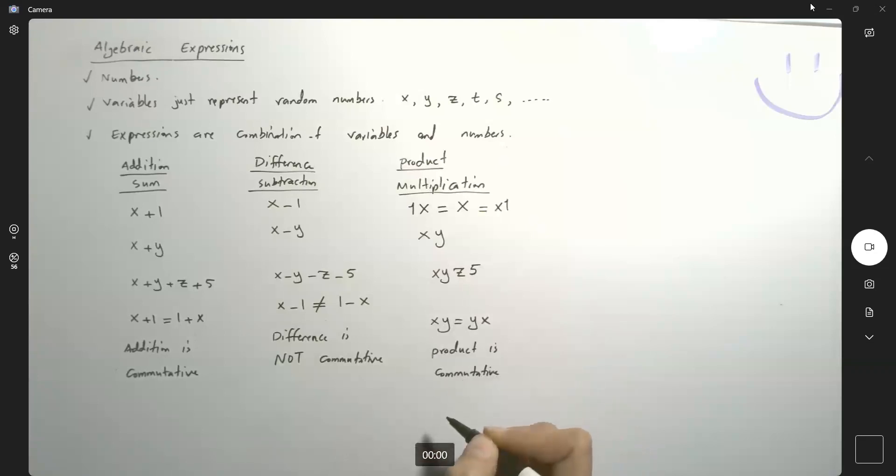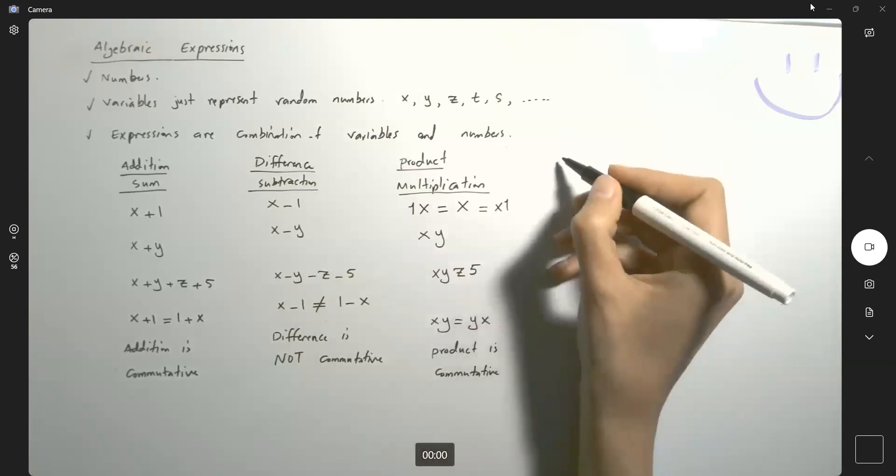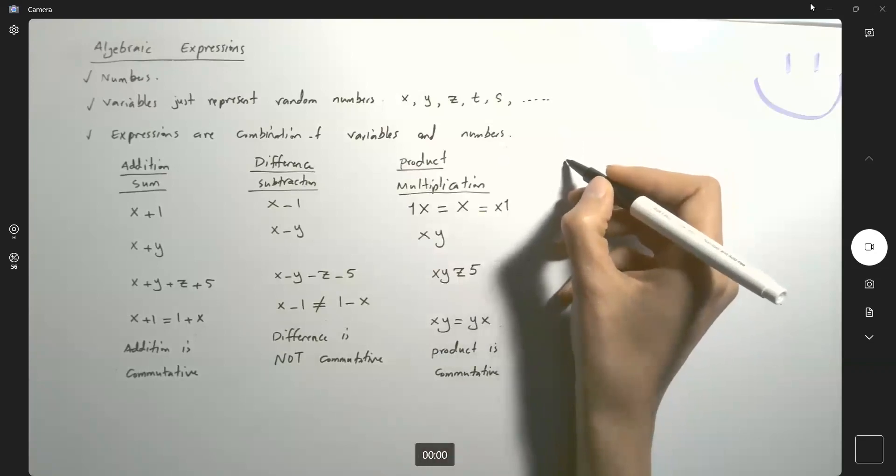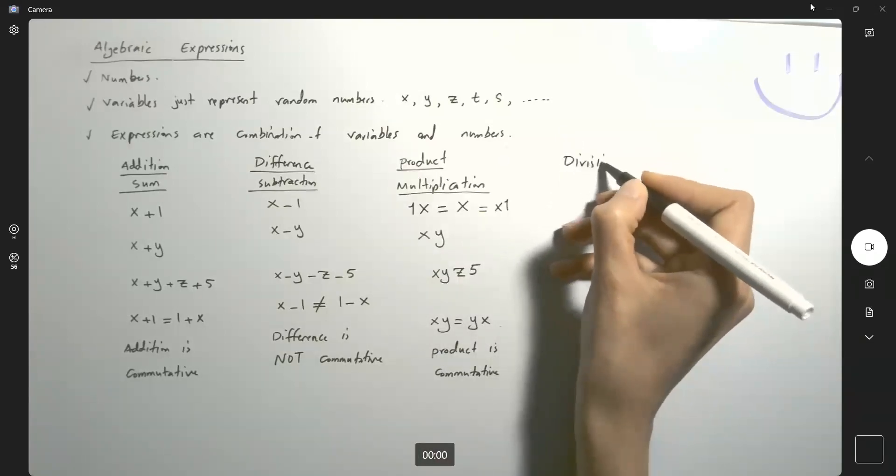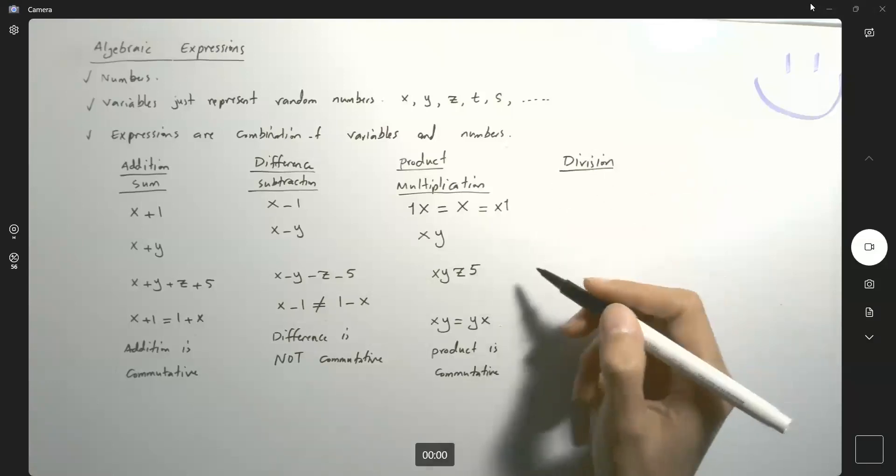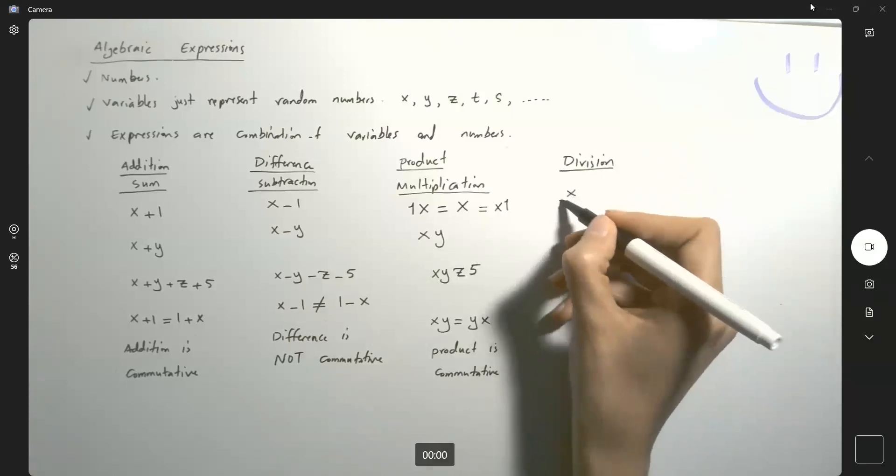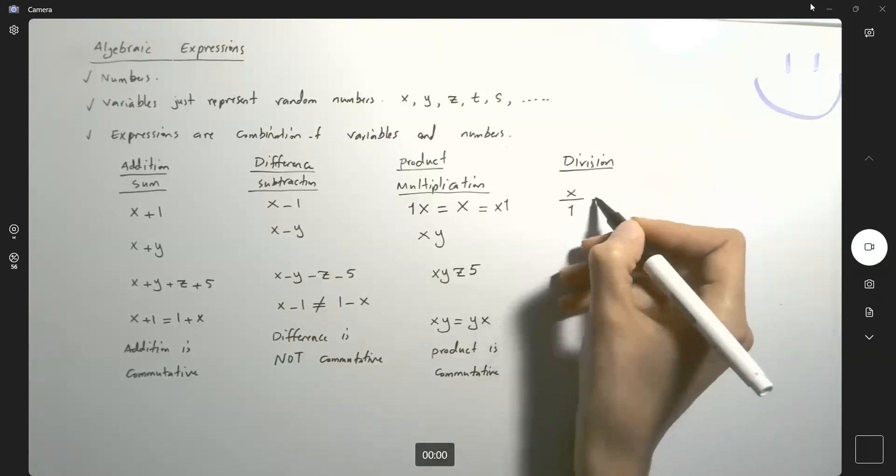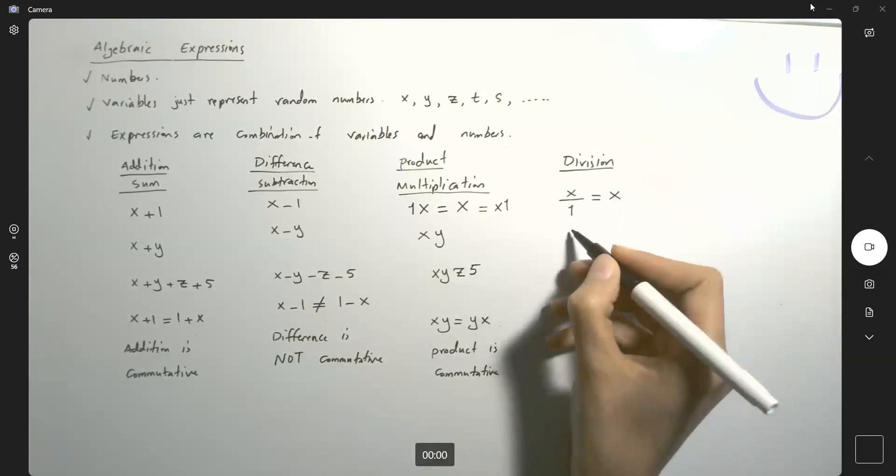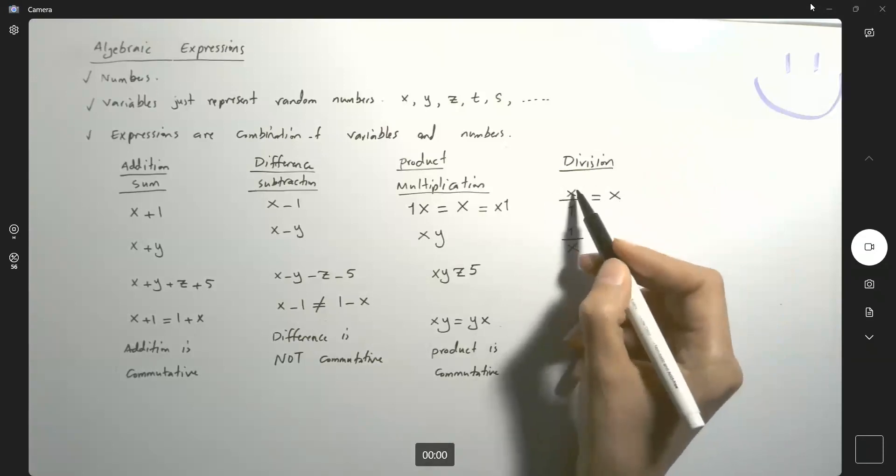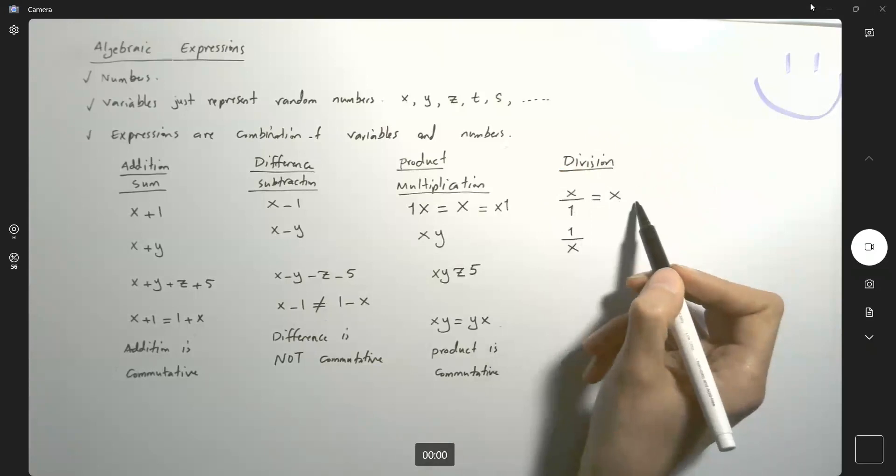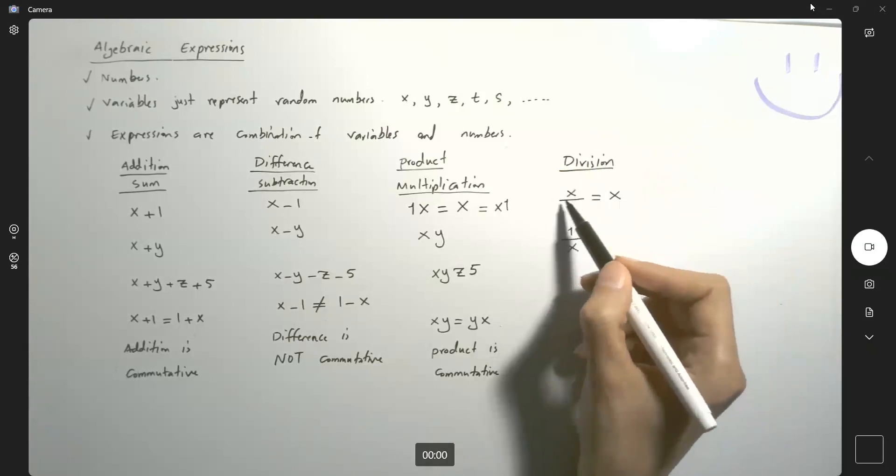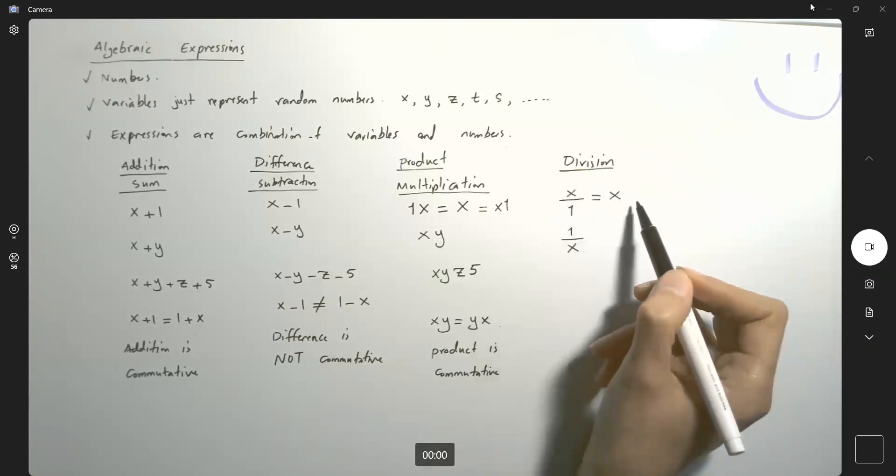And finally, division. So quotient or division. You can divide a variable by a number. X divided by one is always equal to x. But one divided by x is not x. Any expression divided by one is equal to that expression. But if you have one over x, that's a different story. These two are not equal to each other. Be careful.